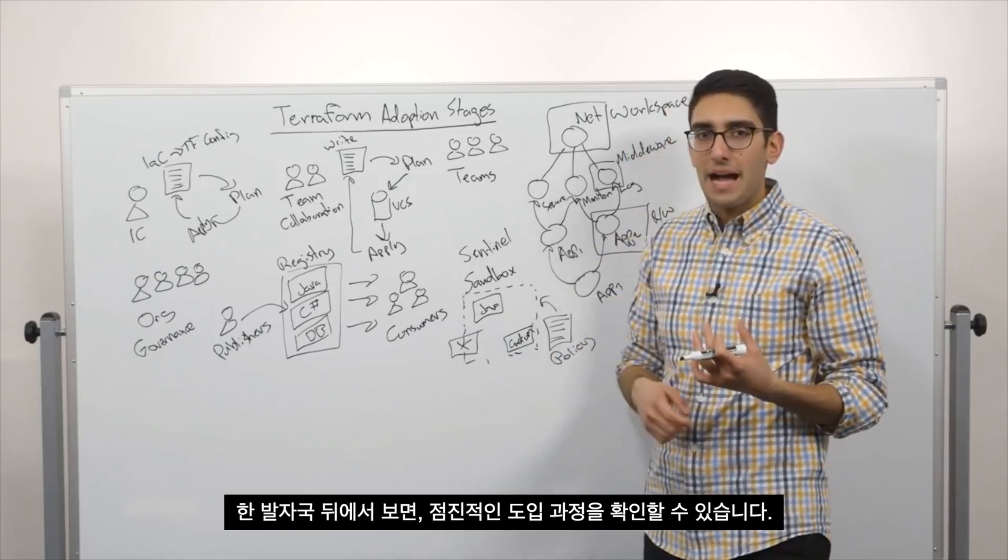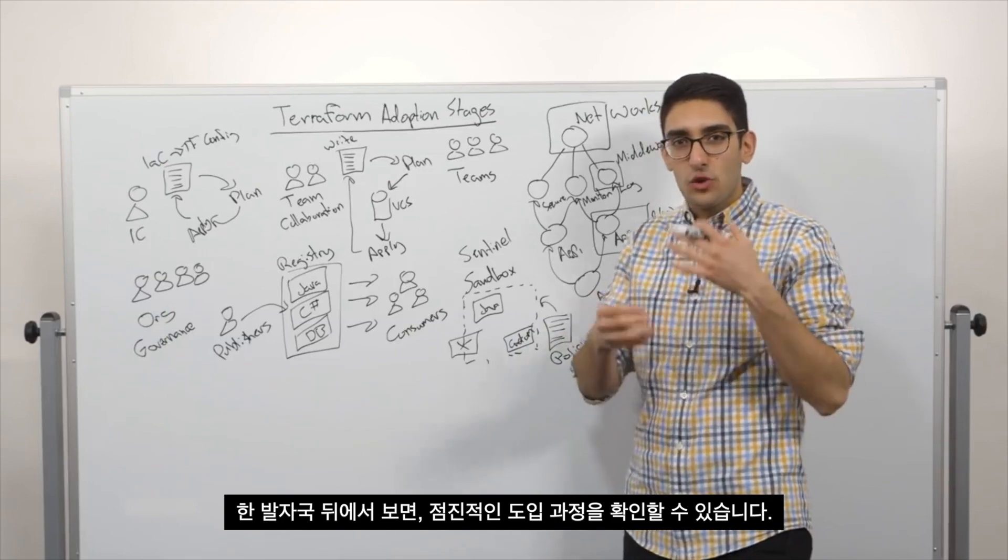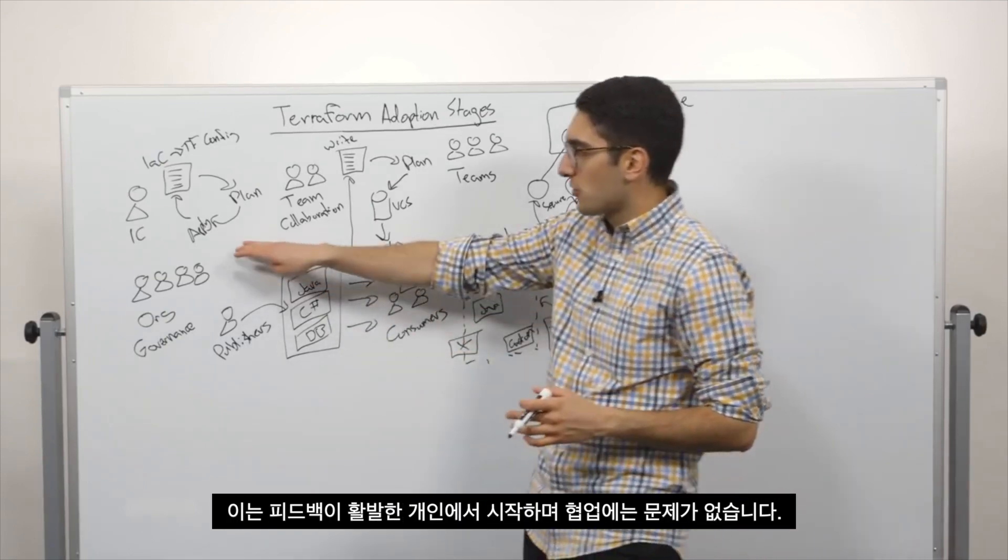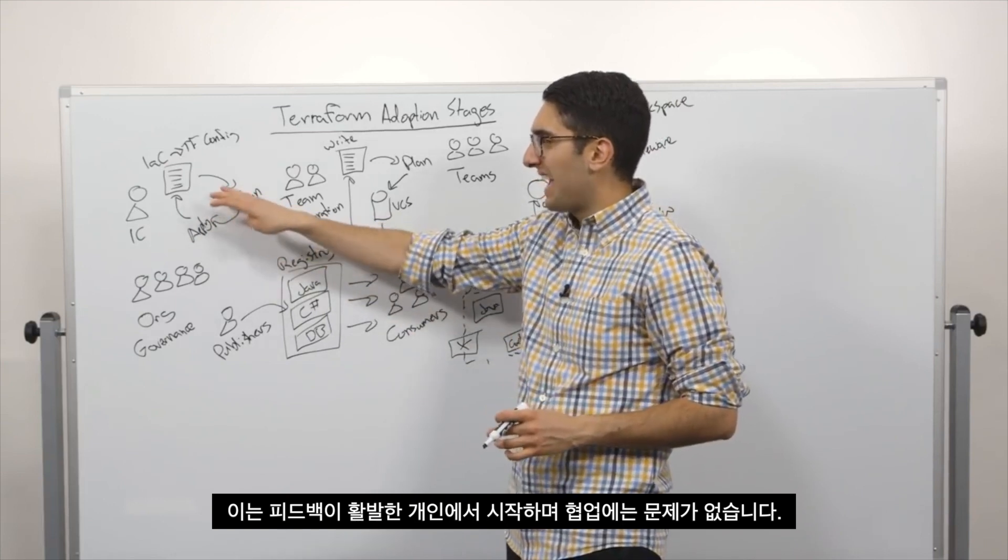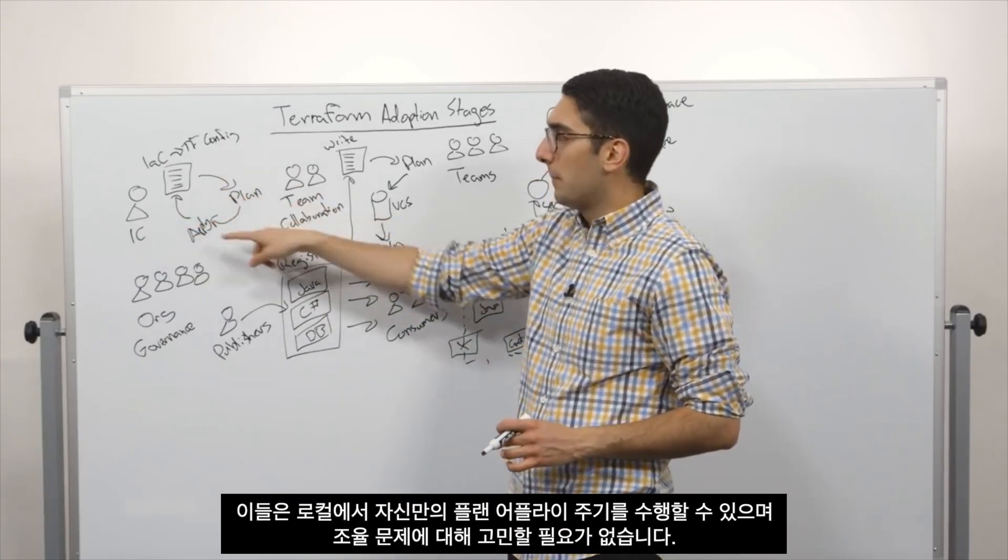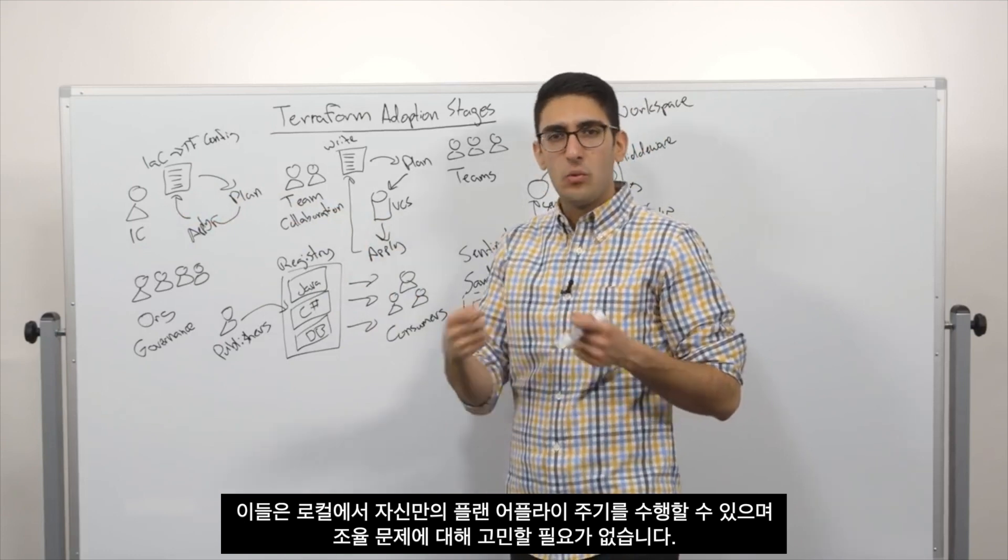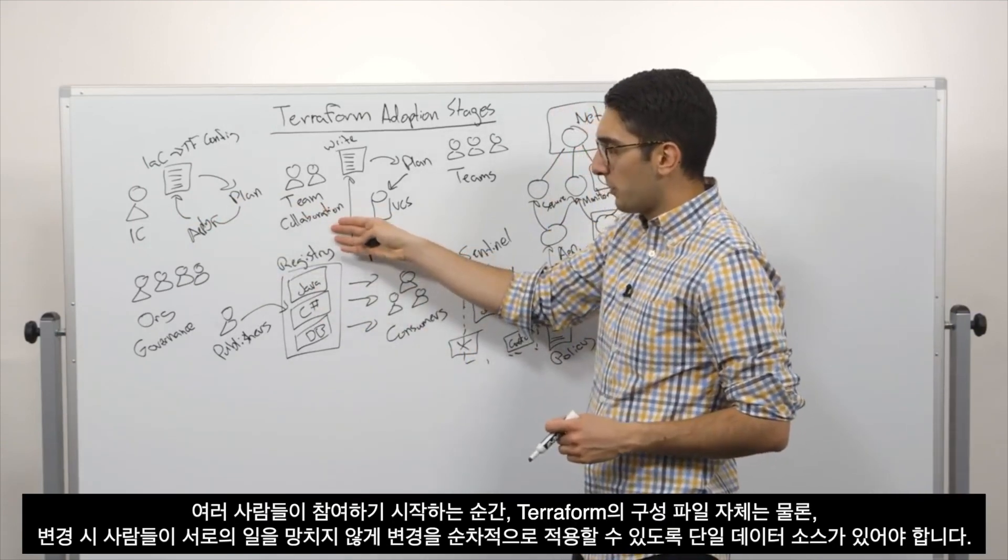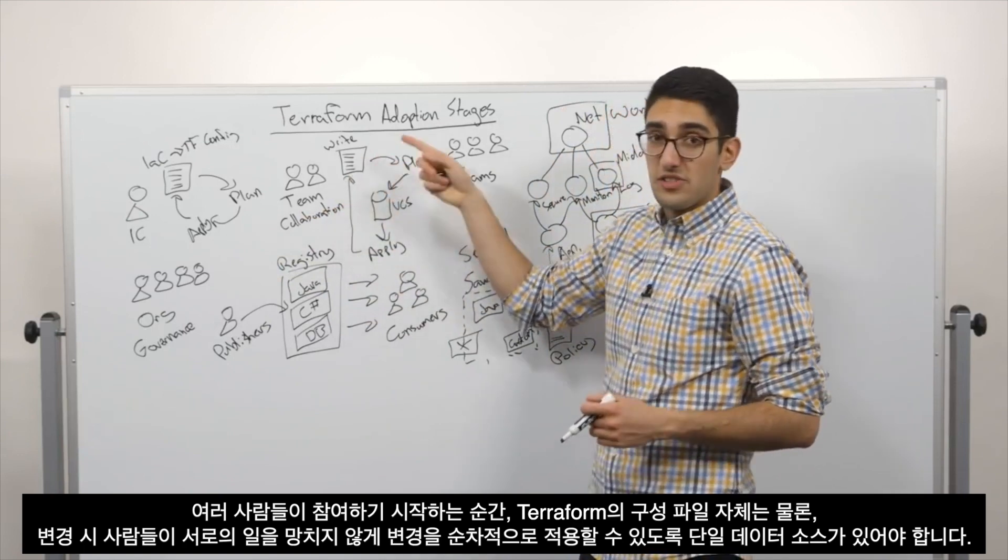So kind of taking a step back, what we really see is there is this gradual adoption curve. It really starts with an individual who has a tight feedback loop and doesn't have a collaboration problem. They're able to do their own plan and apply cycle locally without worrying about coordinating.